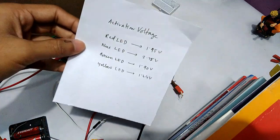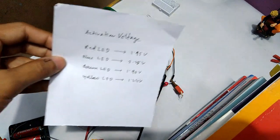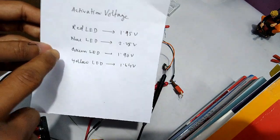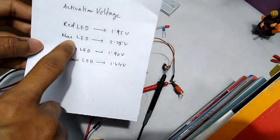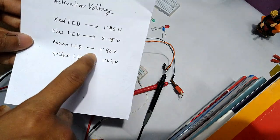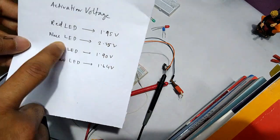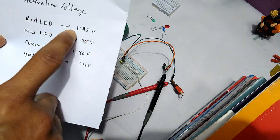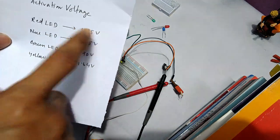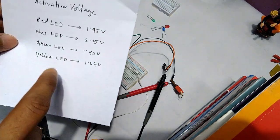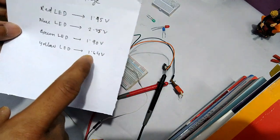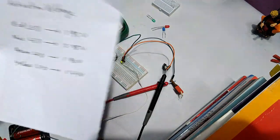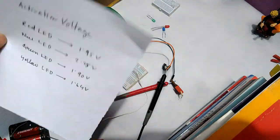I've finished measuring the activation voltages of all the LEDs. For the green LED it's 1.90 volts, for blue it's 2.25 volts, for the red LED it's 1.45 volts, and for the yellow LED it's 1.64 volts. This is our activation voltage table.